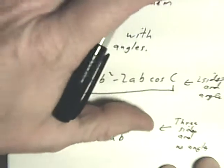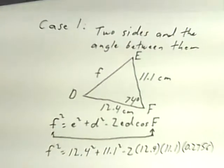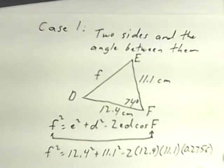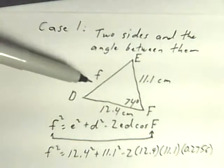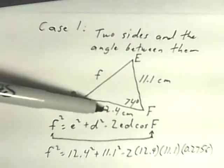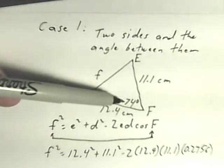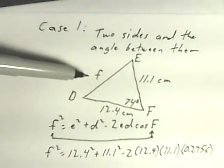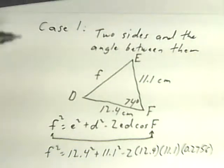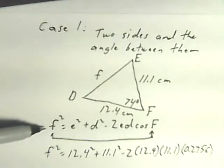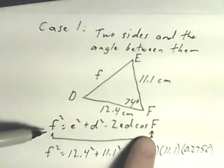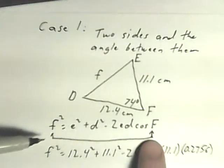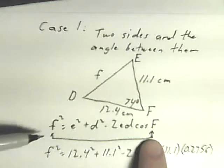So let's do an example. Case one, I'm given two sides and an angle between those sides. So this is the same triangle I drew first. I've got 11.1 centimeters, 12.4 centimeters, 74 degrees, and I'm looking for little f. So I'm just going to write out the cosine law with f squared on the left side equals e squared plus d squared minus 2ed cos F. Remember that the angle here is the same as the letter here.